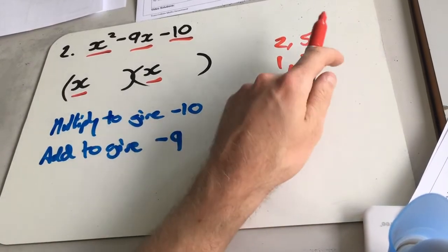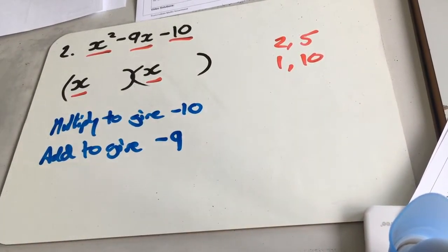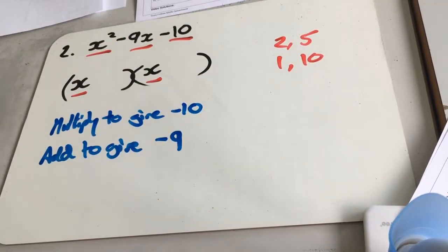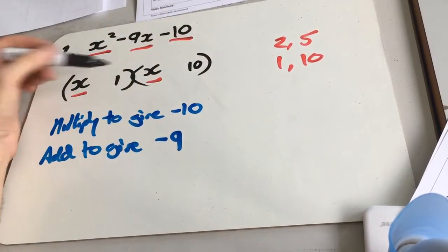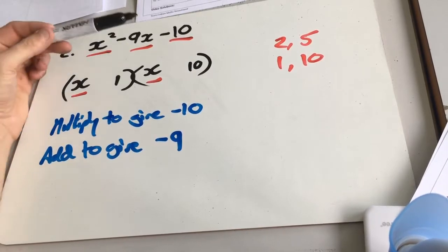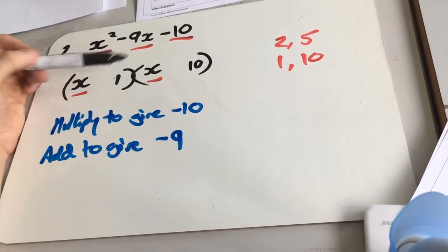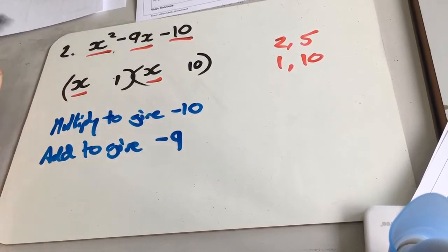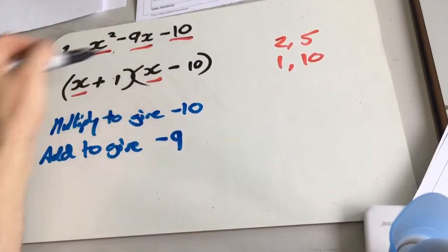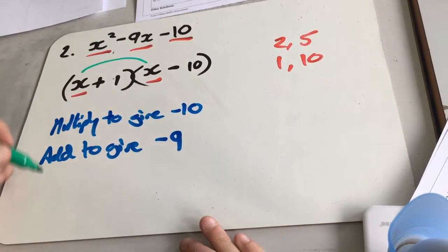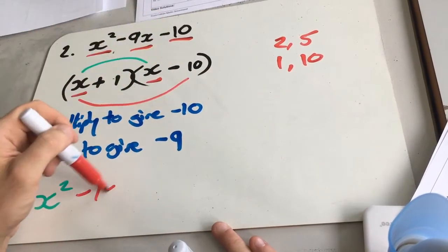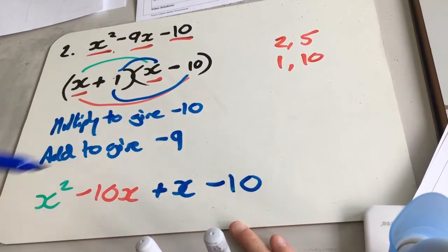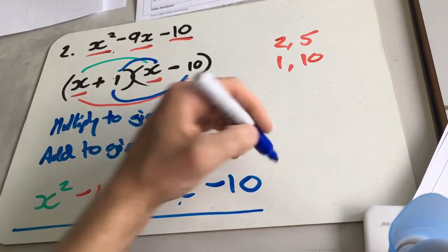Which of these factors might add up to give 9? 2 and 5 add to give 7, or subtract to get 3. 1 and 10 add to give 11, or subtract to get 9 — so it's got to be 1 and 10. Now all we need to work out is the signs. To get a minus product, one is negative and one is positive, and we want them to add to give minus 9. So minus 10 plus 1 gives minus 9: minus 10 and plus 1. Let's expand to check: x times x is x squared, x times minus 10 is minus 10x, plus x times 1 is plus x, and 1 times minus 10 is minus 10. Minus 10 plus 1 gives us minus 9. Correct.